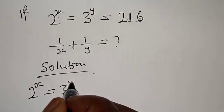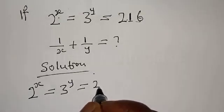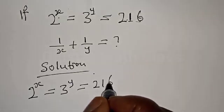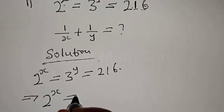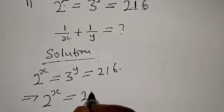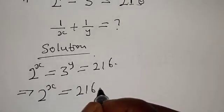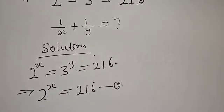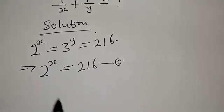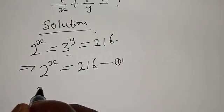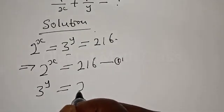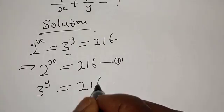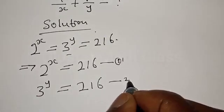Solution: we have 2 raised to power s equal to 3 raised to power y equal to 216. This implies that we have 2 raised to power s equal to 216 — let's call this equation 1. Then we have 3 raised to power y equal to 216 — let's call this equation 2.